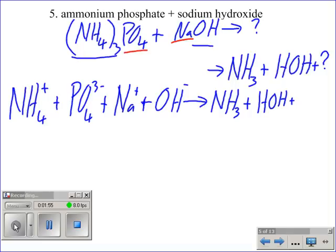All right. Now, would sodium phosphate form a solid? No. Sodium is a group one. So, I would just still have sodium ions and phosphate ions.